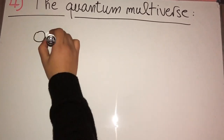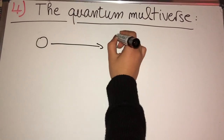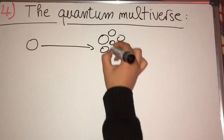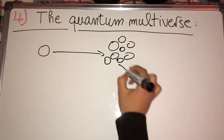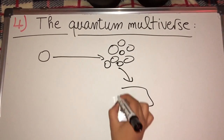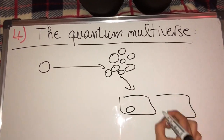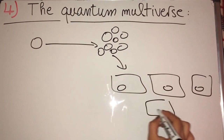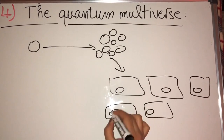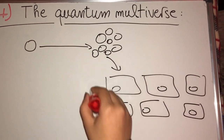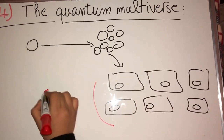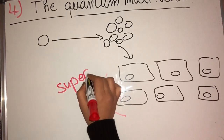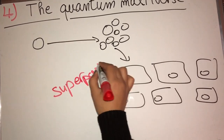Finally, the quantum multiverse. Take an electron — when it moves, we don't know exactly where it is; it can be in any number of places according to quantum mechanics. But take a picture: there are a lot of possibilities, and each possibility would live in its own universe, making the multiverse a superposition of universes.